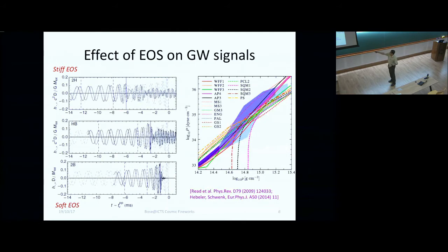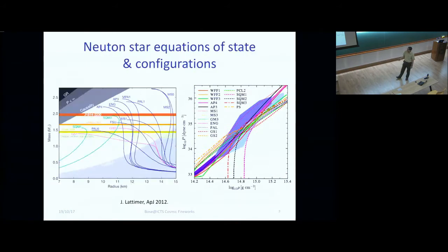They will not coalesce and then ring down exponentially, like black holes do. Rather, their ring down, if you can call it so, will be more muffled or extended. That is what is shown by this faint blue line here. So through tidal effects, which are then imprinted on these waveforms, we have a hope for probing what nuclear matter behaves like. That is the basic idea here.